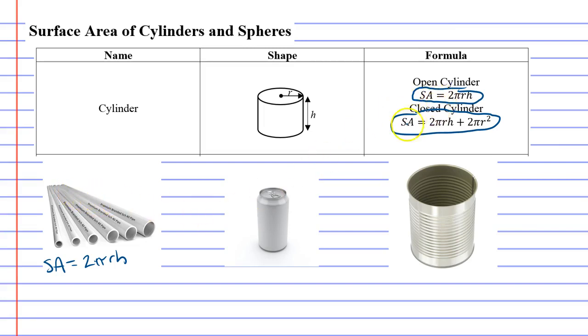Next we have what's called a closed cylinder. An aluminum can is a really good example because it has a lid and it has a base. This one has a formula that's very similar - it still has the 2πRH part, but you also add 2πR² at the end.